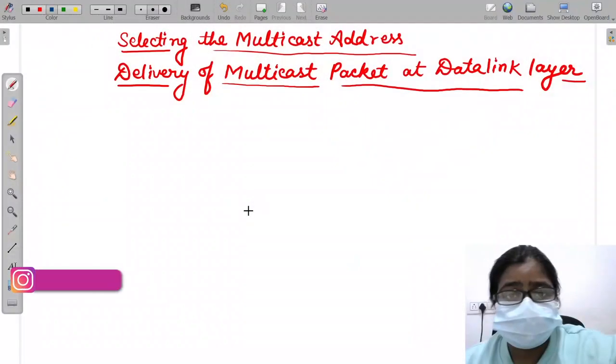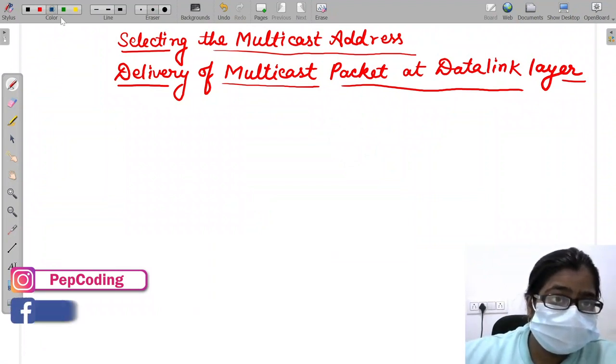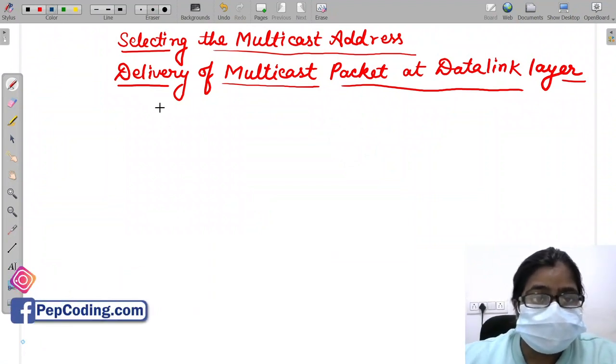Hello friends, in this video we will discuss how to select the multicast address and the second thing is a multicast packet that is created in the network layer - the packet which has been assigned the address at the network layer - so how it should be delivered to the data link layer. So let's start. First thing is selecting the multicast address.